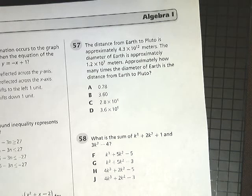The distance from Earth to Pluto is approximately 4.3 times 10 to the 12th meters. The diameter of Earth is approximately 1.2 times 10 to the 7th meters. Approximately how many times the diameter of Earth is the distance from Earth to Pluto?